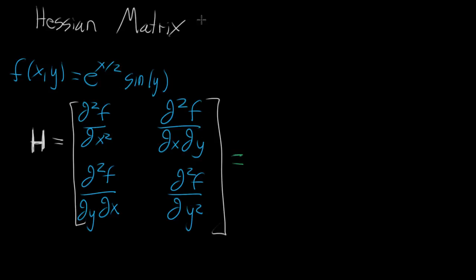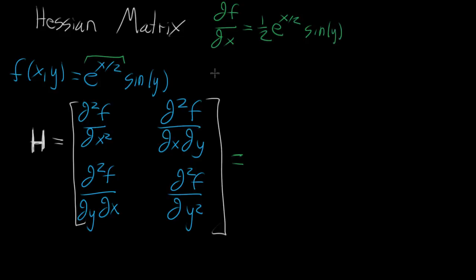Let's go ahead and compute this for our specific function. To get all the second partial derivatives, we first keep a record of the first partial derivatives. The partial derivative of f with respect to x: x only appears in e to the x halves, so we bring down the one half — one half times e to the x halves — and sine of y just looks like a constant, so we get one half e to the x halves times sine of y. The partial derivative of f with respect to y: e to the x halves looks like a constant, and the derivative of sine of y with respect to y is cosine of y, giving us e to the x halves times cosine of y.